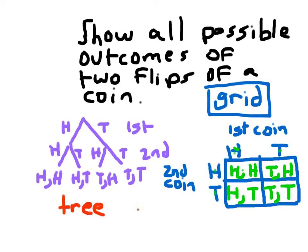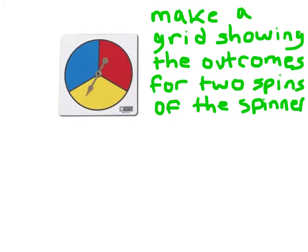The probability tree is sometimes also referred to as a tree diagram. All right, so here we're asked to make a grid showing the possible outcomes for two spins of the spinner. Now this time I'm going to go ahead and put my first spin right here.